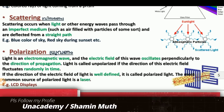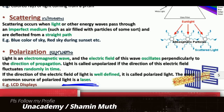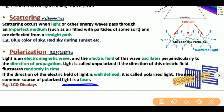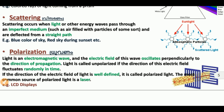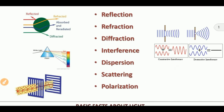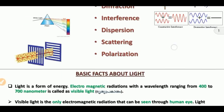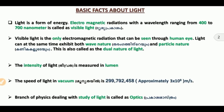A source of polarized light is a laser — laser light is polarized. Polarization is used in LCD display technology. To summarize, the optical phenomena we covered are: reflection, refraction, diffraction, interference, and polarization. These are the basic facts about polarization.